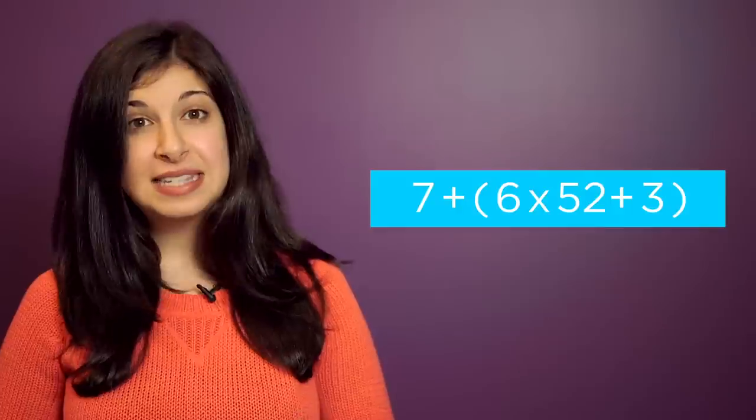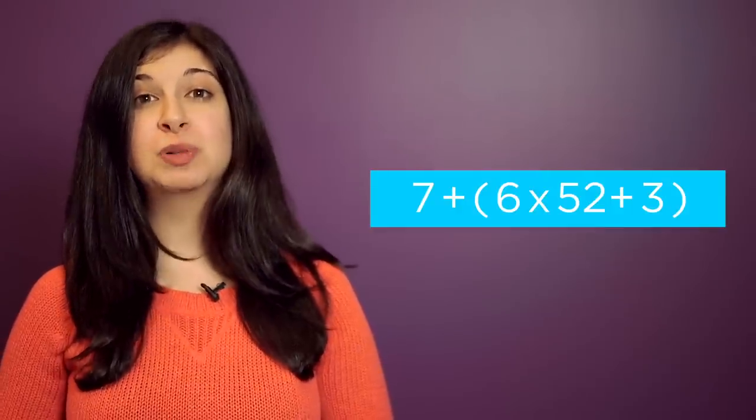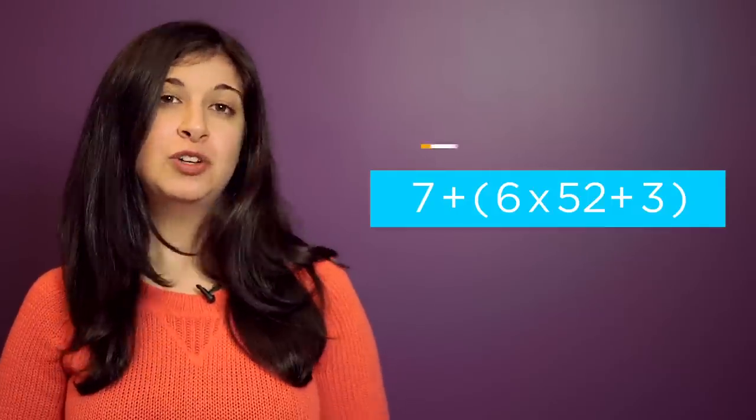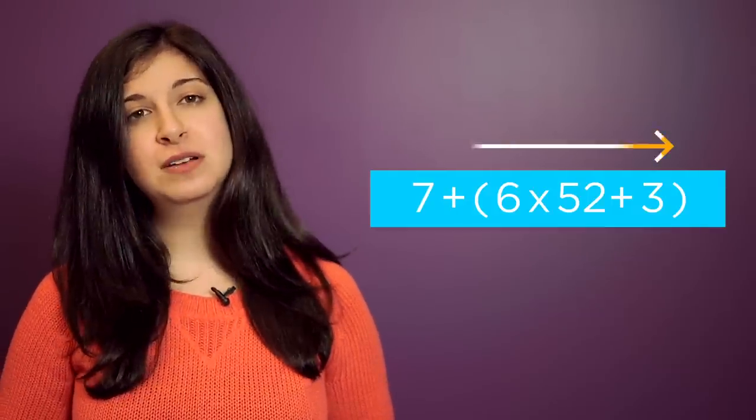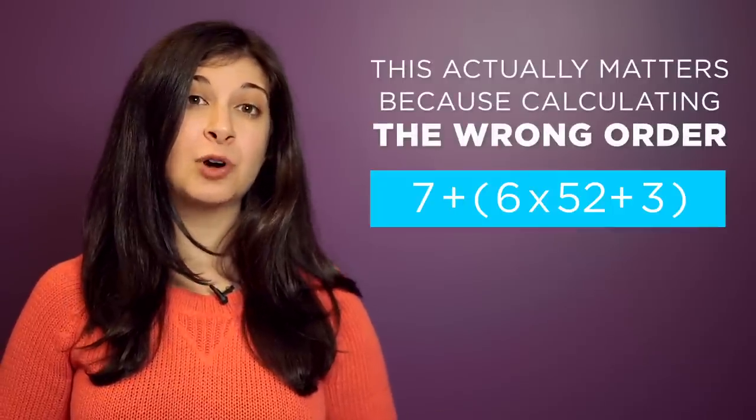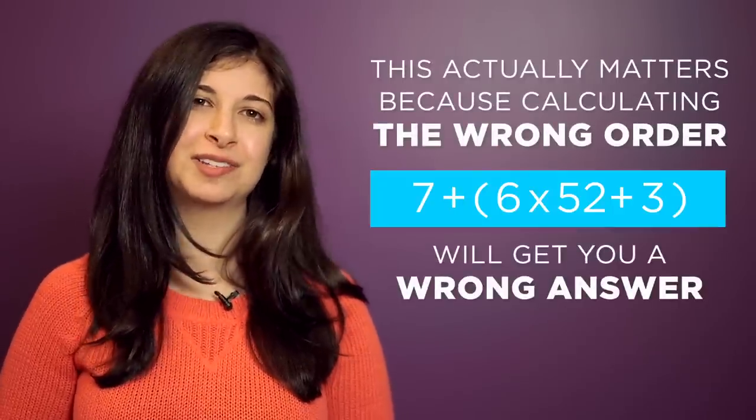But when you see something like seven plus six times 52 plus three, which parts should you calculate first? Do you start at the left and go to the right, or start at the right and go to the left? This actually matters, because calculating the wrong order will get you a wrong answer.